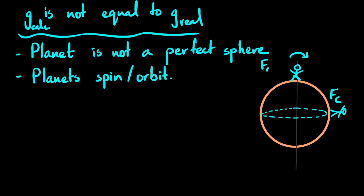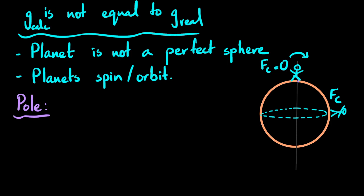But at the pole, on the axis of rotation, you have no centripetal force. If you have no distance from the axis of rotation, there is no centripetal force. At the poles you are completely stationary — not rotating with the Earth at all. So at the poles, since there is no centripetal force, the gravitational force equals the weight: F_g = W.